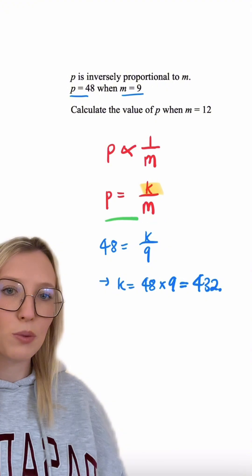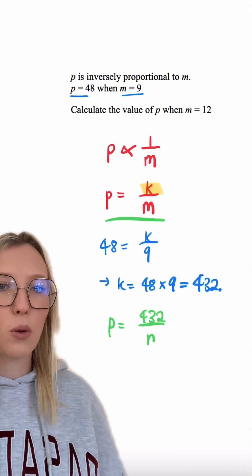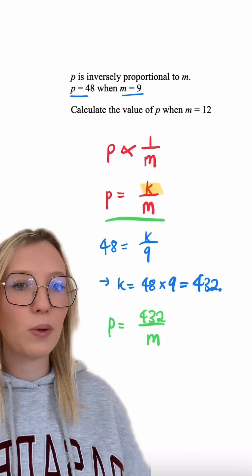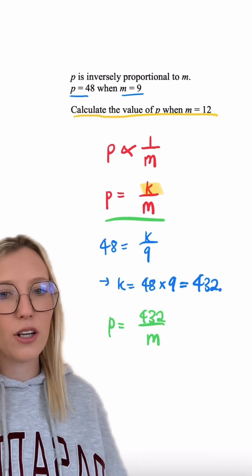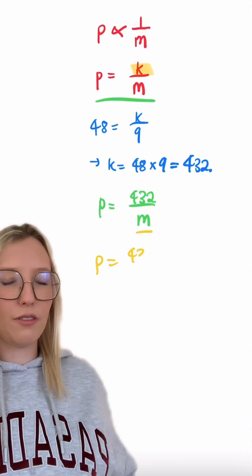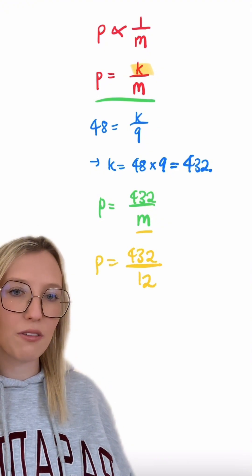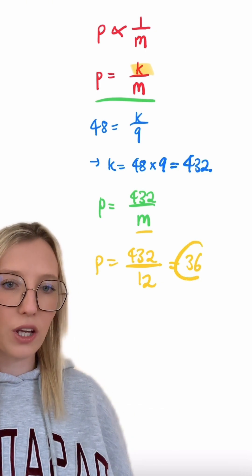So putting this back into the equation, we get P equals 432 over M. Now the question asks us to calculate the value of P when M is 12, so we just need to plug this in. So P equals 432 divided by 12, which is just going to leave us with a value of P equal to 36.